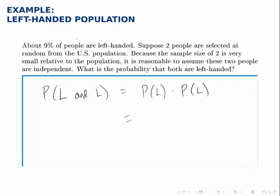Since 9% of people are left-handed, the probability of drawing a left-handed person is 9% or 0.09. So we multiply together, 0.09 twice, and we get 0.0081. So there's a little less than 1% chance that these two people that we select randomly are both left-handed.